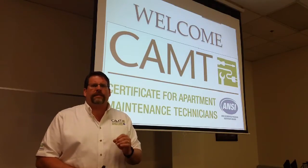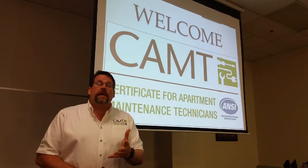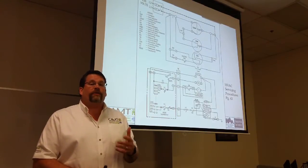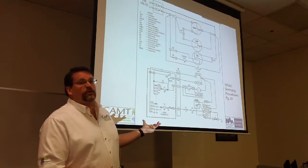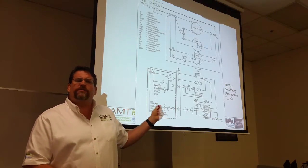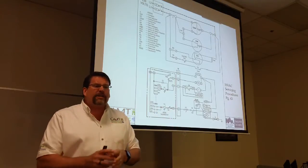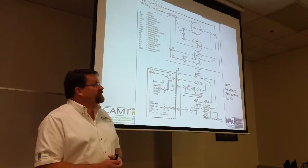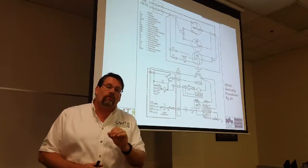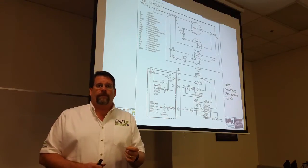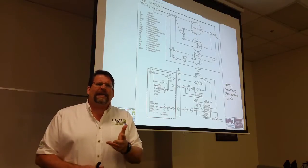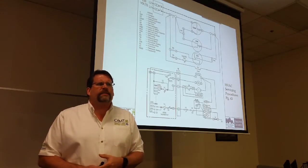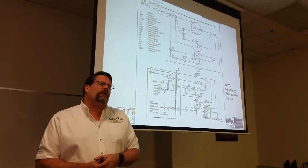One of the downfalls of doing things that way exclusively is that we miss technical accuracy. For instance, in the CAMT course we're going to be learning how to read all these squiggly lines and symbols and use a voltmeter or ohmmeter to actually make accurate repairs. In other words, in this gas furnace system, we learn how to repair only the components that are broken. In addition, we can straighten out some misunderstandings or some things that we actually never learned.